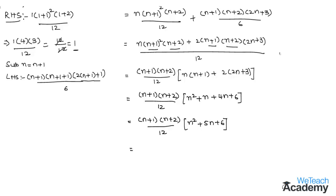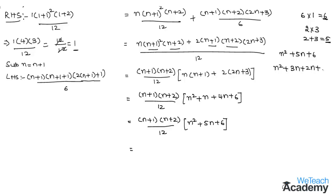Now factorize n² + 5n + 6. Multiplying the coefficient of n² and the constant: 1 × 6 = 6, with factors 2 and 3, and 2 + 3 = 5, the coefficient of n. So n² + 5n + 6 = n² + 3n + 2n + 6 = n(n+3) + 2(n+3) = (n+3)(n+2).